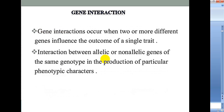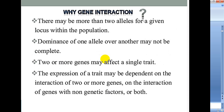Coming to gene interaction, this interaction occurs when two or more genes influence the outcome or form of a single character. This interaction can be between genes of the same loci, between alleles, or between non-allelic genes. When the interaction is between alleles, it is called allelic gene interaction, and when the genes are of different alleles, it is called non-allelic gene interaction.